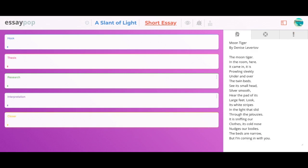Let's take a look at the poem. The Moon Tiger: In the room here it came, and it is prowling sleekly under and over the twin beds. See its small head, silver smooth. Hear the pad of its large feet. Look its white stripes in the light that slid through the jalousies. It is sniffing our clothes, its cold nose nudges our bodies. The beds are narrow but I'm coming in with you. Okay, let's see what we can do with this.